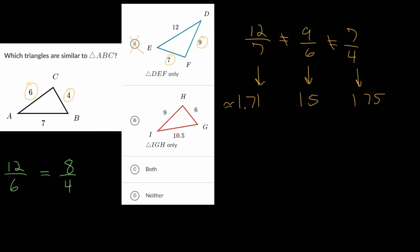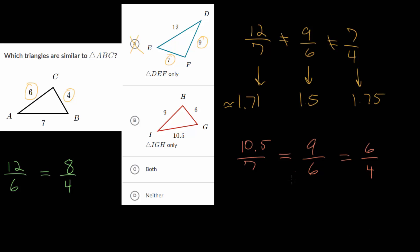If we look at option B, we follow the same process looking first at the long sides. GI compared to AB is 10.5 divided by 7. We then check the middle side lengths: HI which is 9 divided by 6. And finally the smaller sides: HG compared to CB which is 6 over 4. If we simplify all of these, we actually get the same number for all of them — as decimals, these are all 1.5. Since all side lengths are proportional to the corresponding side lengths in our given triangle, these two triangles are similar, so choice B is the correct answer.